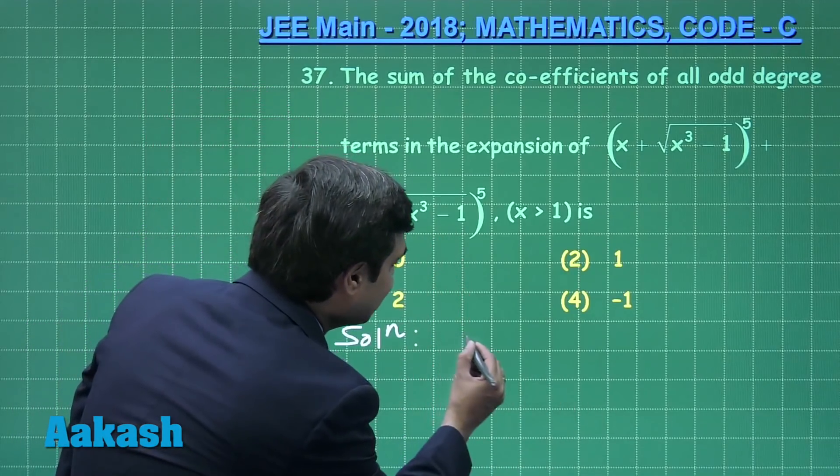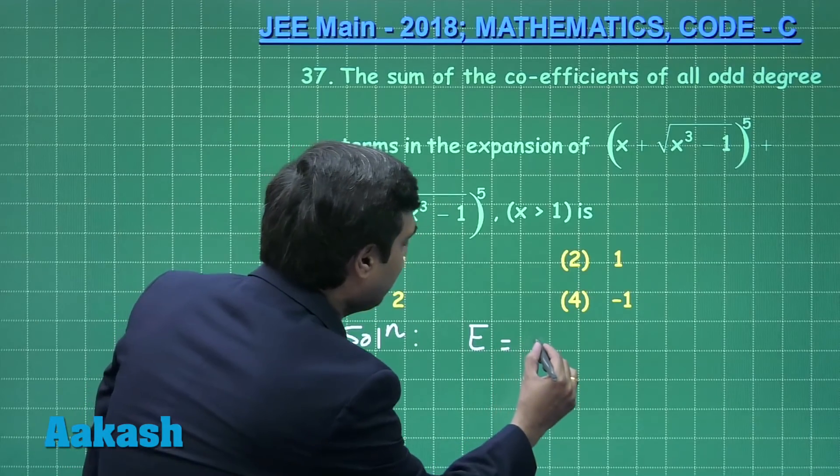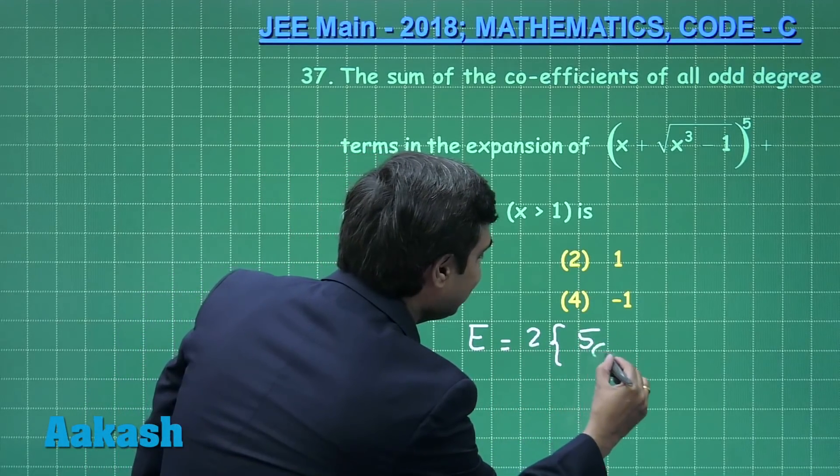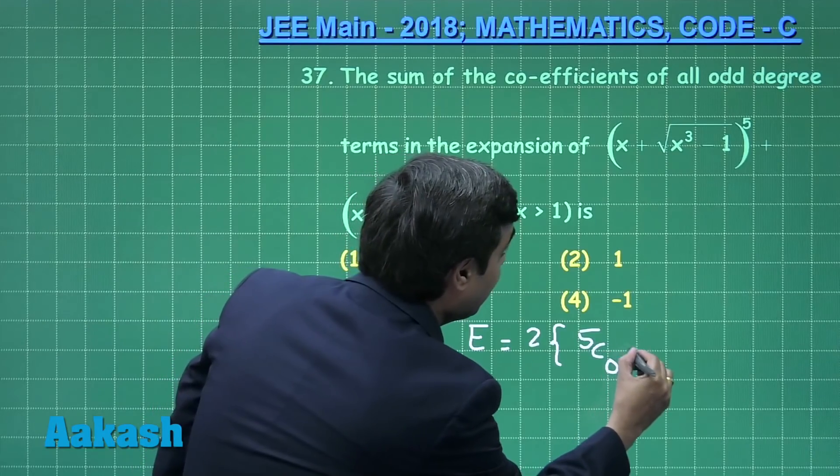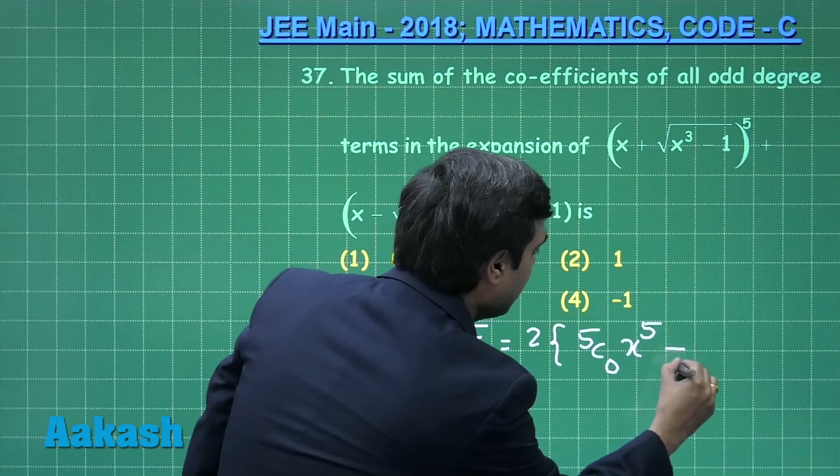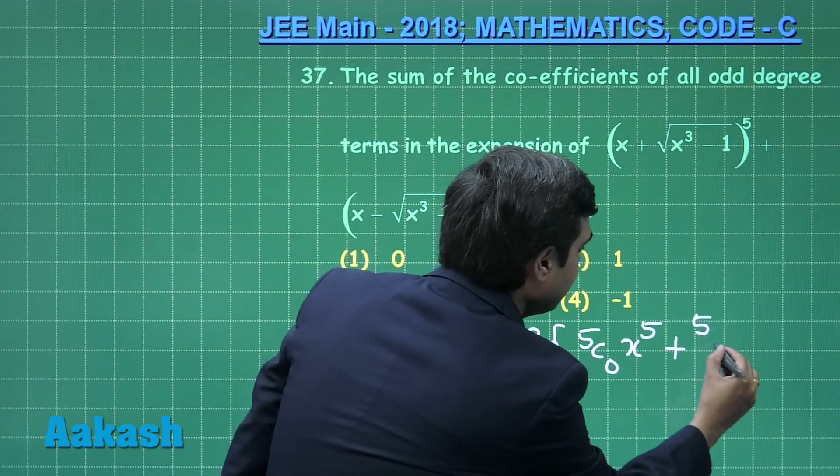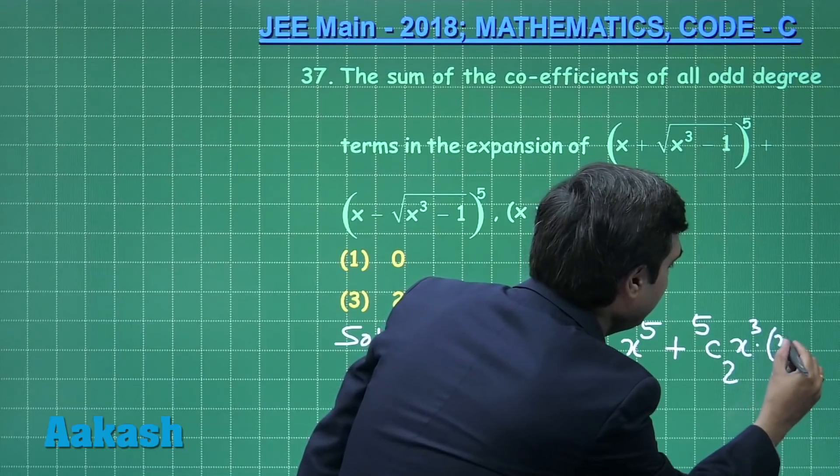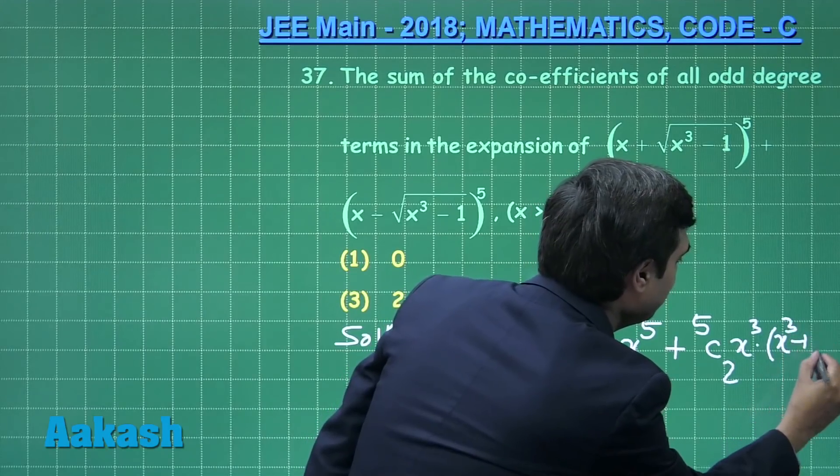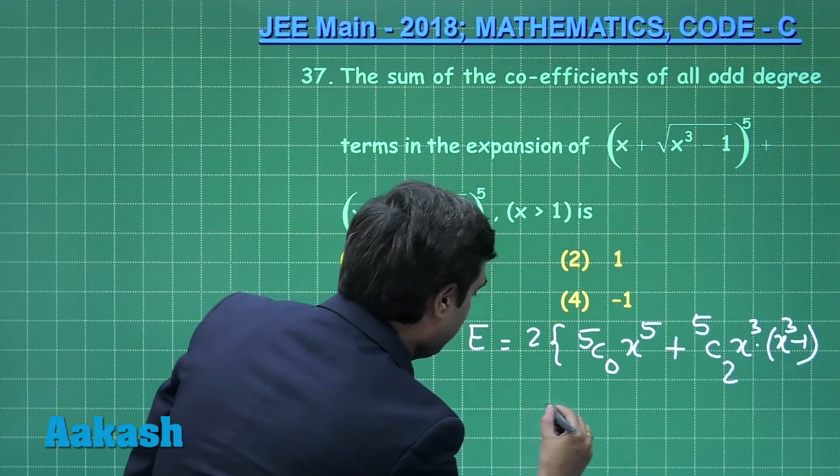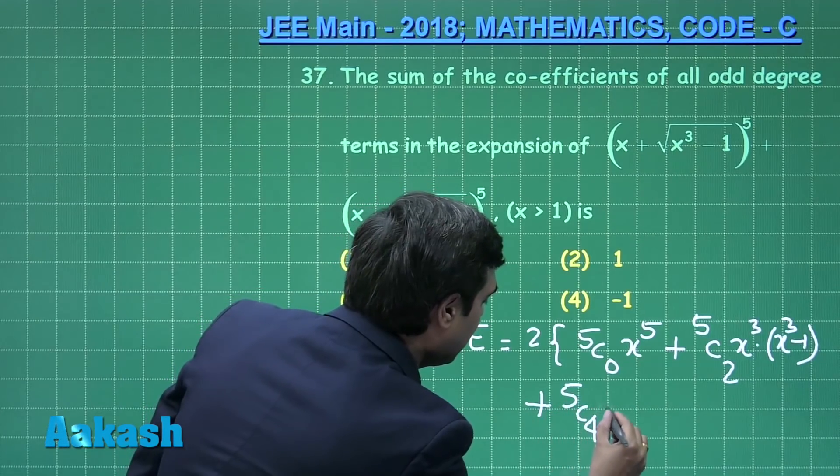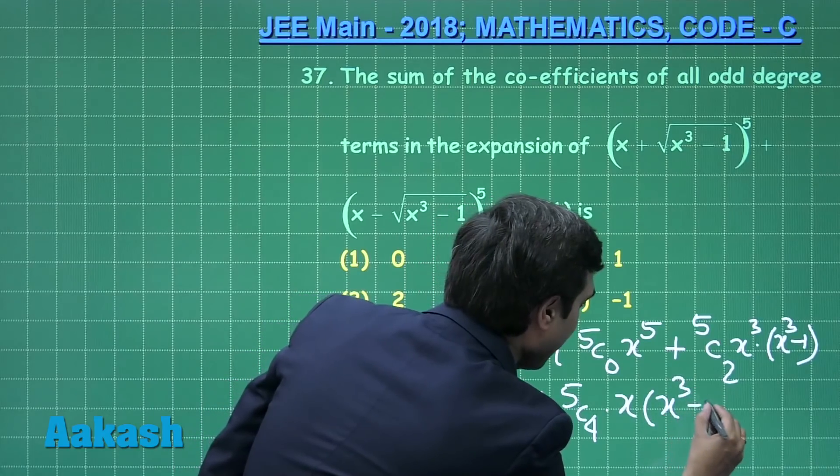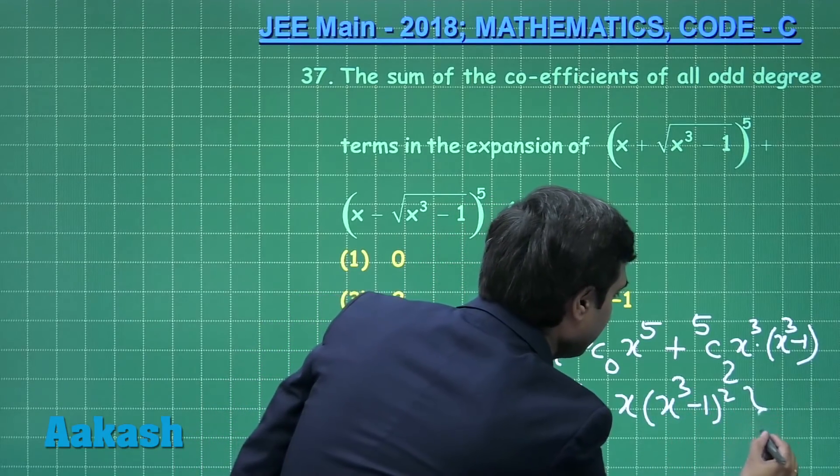Expanding, let us consider the expression as E. We can write twice of 5C₀x⁵ plus 5C₂x³ multiplied with (x³ - 1) plus 5C₄ multiplied with x into (x³ - 1)² correct.